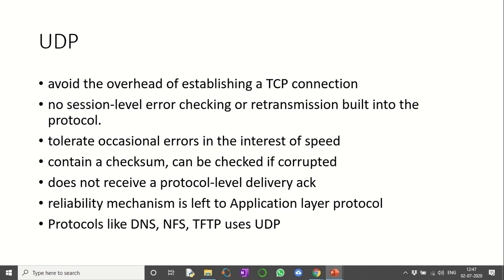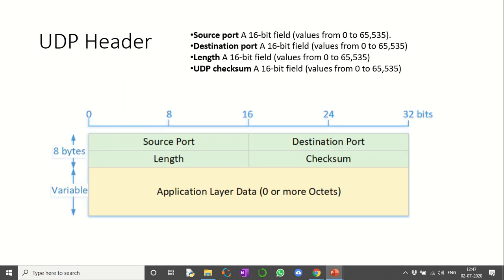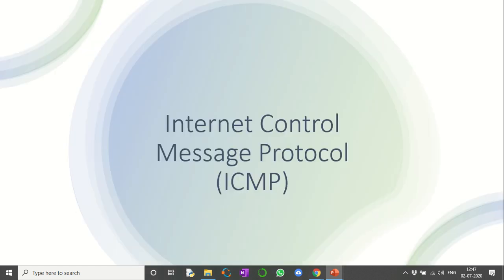Here is the UDP header — it is a simple header. The word length is 32 bits. It mainly contains four fields: source port, destination port, length of the packet, and checksum of the packet. Very simple. This is about UDP, and now we move on to Internet Control Message Protocol or ICMP.